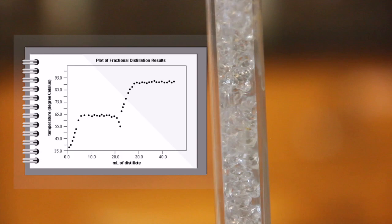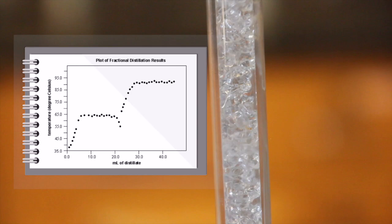The apparent boiling point of each compound is the temperature plateau observed while the liquid continues to distill. Identifying this point in the simple distillation will be more difficult than in the fractional distillation, but since the entire group has the same two unknown compounds, sharing data can be very beneficial.